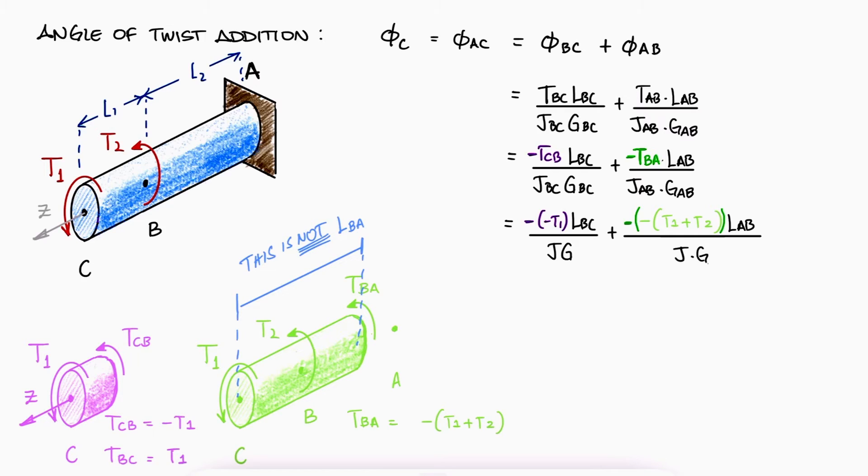We only use that cut from C to somewhere between A and B to find the internal torque, but that doesn't mean that the length corresponding to LAB is the length from C to that location. LBC is L1, and LAB is L2. All of these concepts are essential for finding angles of twist.